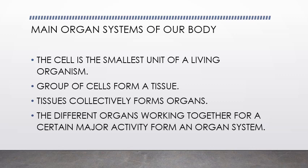What are the main organs which are present in our body? Coming to the organs and organ systems, first we should know what is a cell. A cell is the smallest unit of a living organism — the structural and functional unit of living organisms, or the basic unit of life. A group of cells forms a tissue, tissues collectively form organs, and different organs working together for a certain major activity form an organ system.